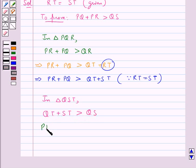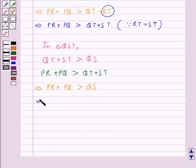So, now, PR plus PQ is greater than QT plus ST gives us PR plus PQ is greater than QS. Or, we have PQ plus PR is greater than QS.